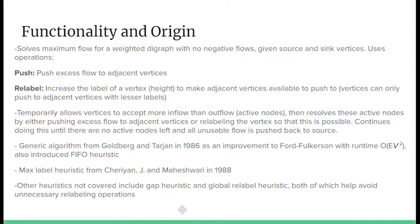The generic algorithm chooses the next active node to resolve arbitrarily, but the two heuristics we'll be going over change the way that the next active node is chosen to be resolved. This runs until there are no longer any active nodes and all unusable flow is eventually pushed back to the source.